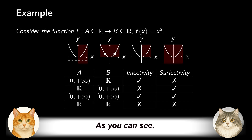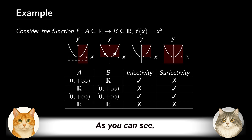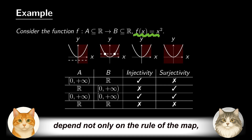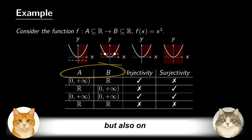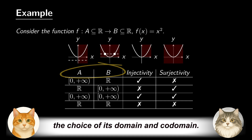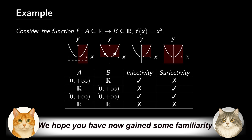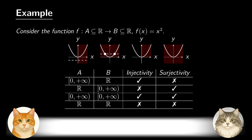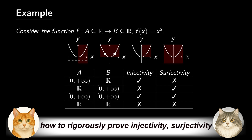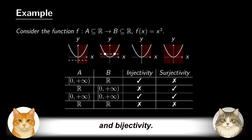As you can see, injectivity, surjectivity, and bijectivity depend not only on the rule of the map, but also on the choice of its domain and codomain. We hope you have now gained some familiarity with these basic concepts. In the next section, we'll explain, through examples, how to rigorously prove injectivity, surjectivity, and bijectivity.